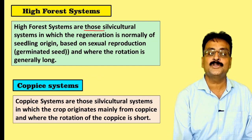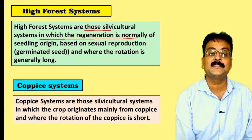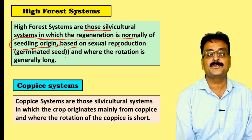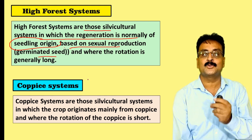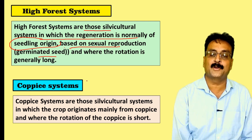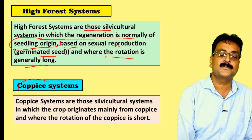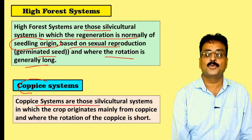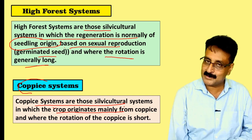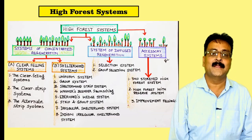High forests are those silviculture systems in which regeneration is normally of seedling origin, based on sexual reproduction generated through seeds. These forests come up from seed to seedling, and the rotation is generally long. Coppice systems are those silviculture systems in which the crop originates mainly from coppice shoots, and the rotation is short. We will be studying both high forest and coppice systems.